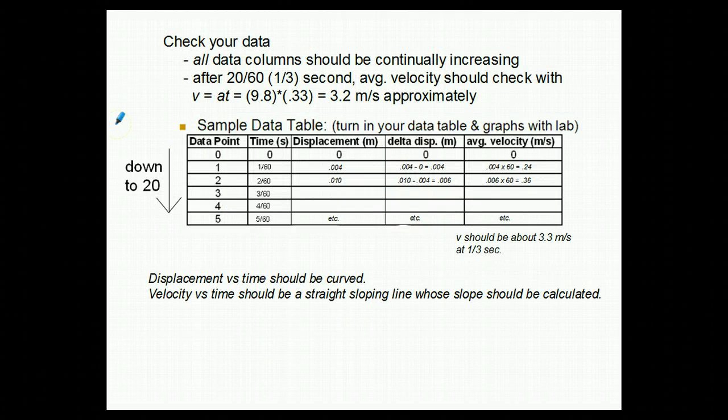Then, when you're done, check your data to make sure you didn't make any terrible mistakes. All data columns should be continually increasing. And after the last line in your chart, which is twenty over sixty seconds, or one-third of a second, your average velocity should check with our equation for the velocity of a falling object starting from rest, which is about three point two meters per second. So your twentieth entry in your data table for velocity should be close to this number. If it's way off, then you've made some terrible mistake and you need to go back and check your work.